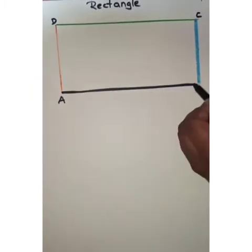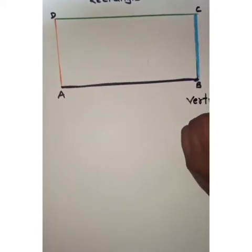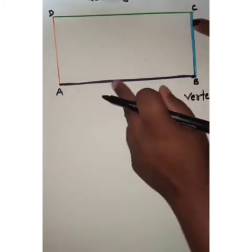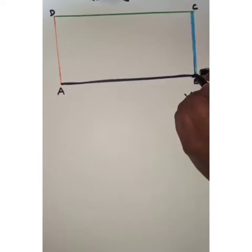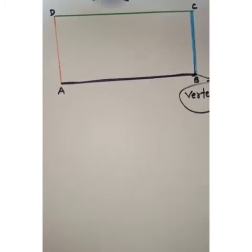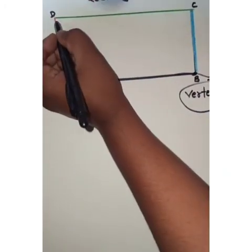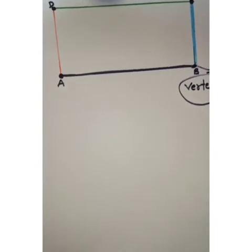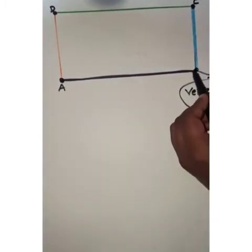Now children, the point where two sides meet together is called a vertex. See here — point A and point B are meeting here, so this is called a vertex. In the same way, point C and point D are meeting together, so that is also a vertex. These points are called vertices because two sides are meeting together at each point.